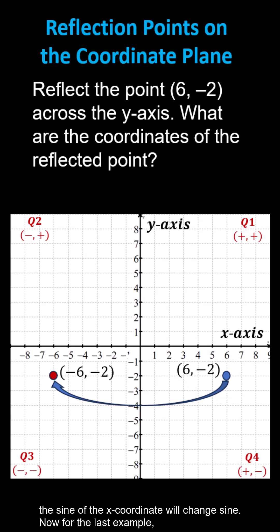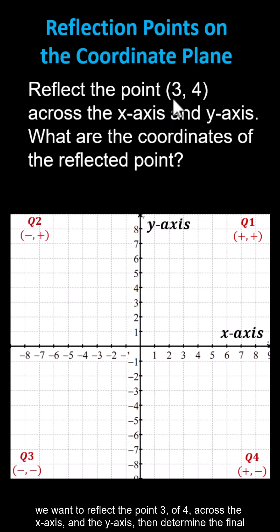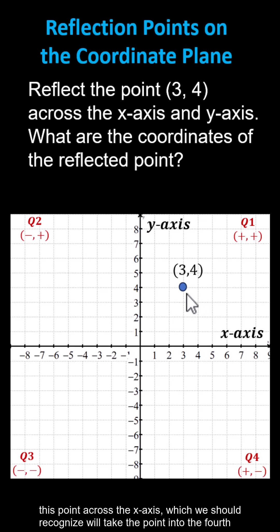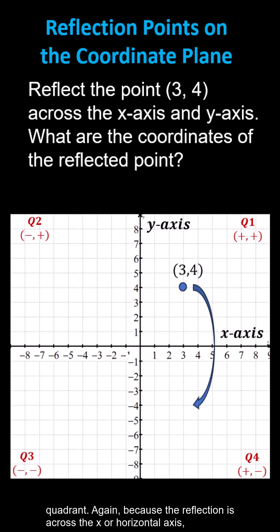For the last example, we want to reflect the point 3 comma 4 across the x-axis and the y-axis, then determine the final coordinates. Let's first plot the given point 3 comma 4, which is in the first quadrant. Let's first reflect this point across the x-axis, which we should recognize will take the point into the fourth quadrant.